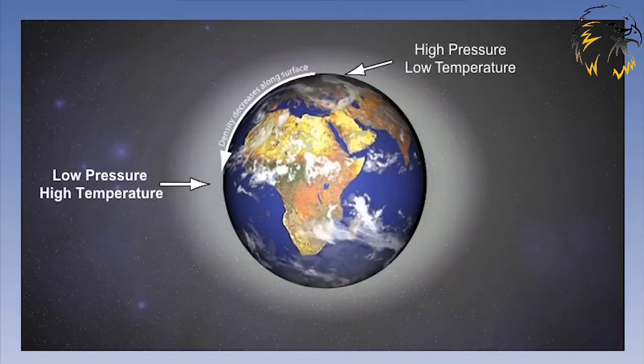Looking at just the surface conditions, we can compare the poles to the equator. From the diagram, we can see that at the poles, the temperature is generally colder and the pressure generally higher than at the equator. The combined effect is that at the surface, the density at the poles is greater than at the equator.